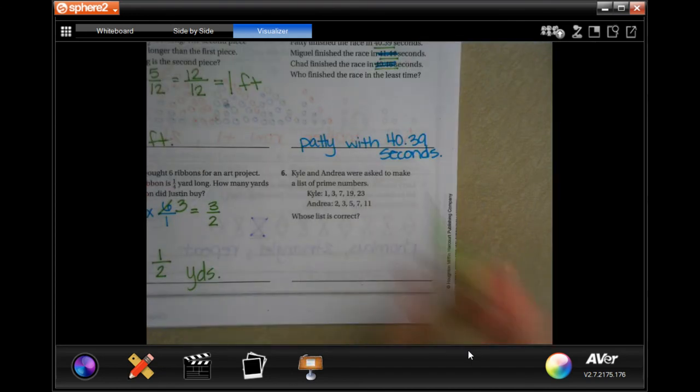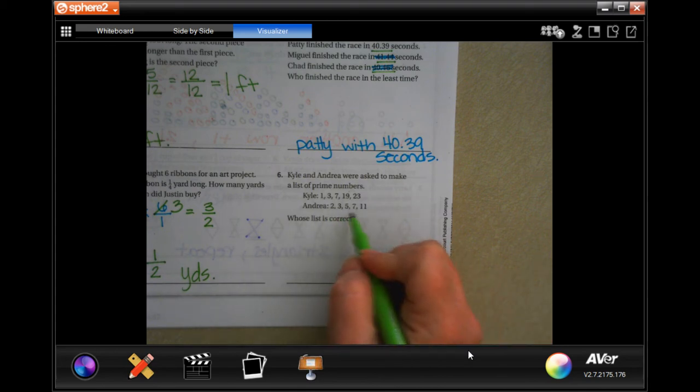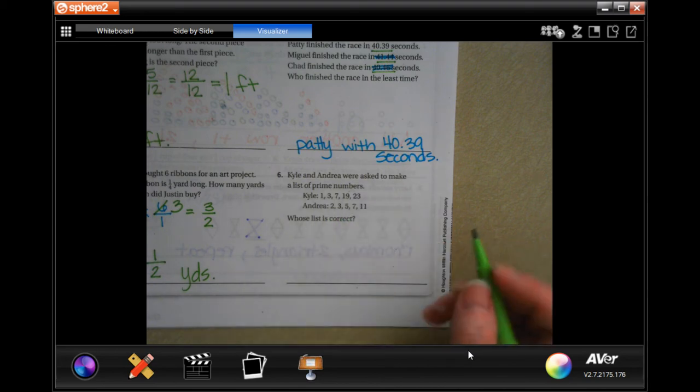All right, Kyle and Andrea were asked to make a list of prime numbers. So, Kyle said 1, 3, 7, 19, 23. Andrea said 2, 3, 5, 7, 11. Whose list is right?